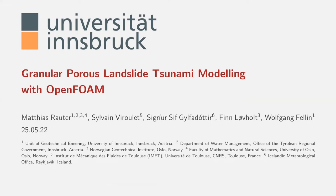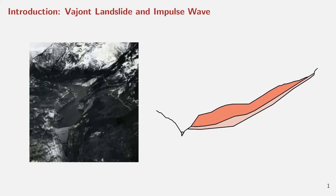My name is Matthias Rauter. What I will present today is the last part of my PhD thesis from the University of Oslo; I'm now back at the University of Innsbruck. About one hour from where I'm sitting in Northern Italy is the old Vajont dam, built in the 1960s to generate green energy. On the left is an aerial picture of the dam with the artificial lake behind it. On the right is a sketch of the geological situation.